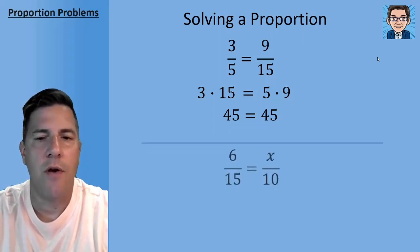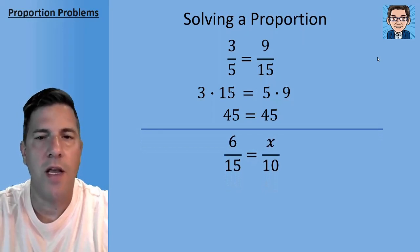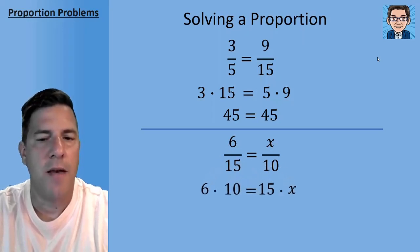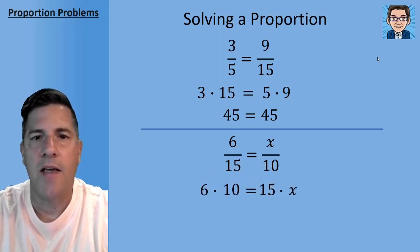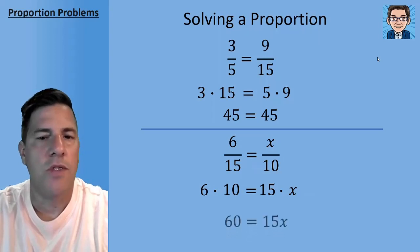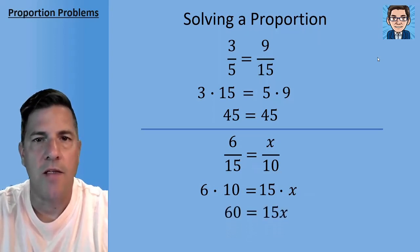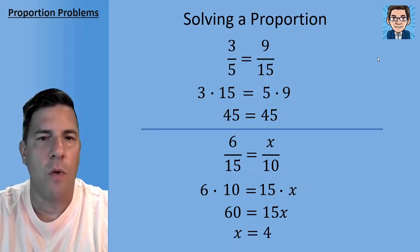So we can use that to solve for an unknown. If we've got 6/15 equals x/10, we can cross multiply the 6 times 10 and the 15 times x and set them equal to each other. So 60 is going to equal 15x. Divide both sides by 15 to solve for x and we get x equals 4.